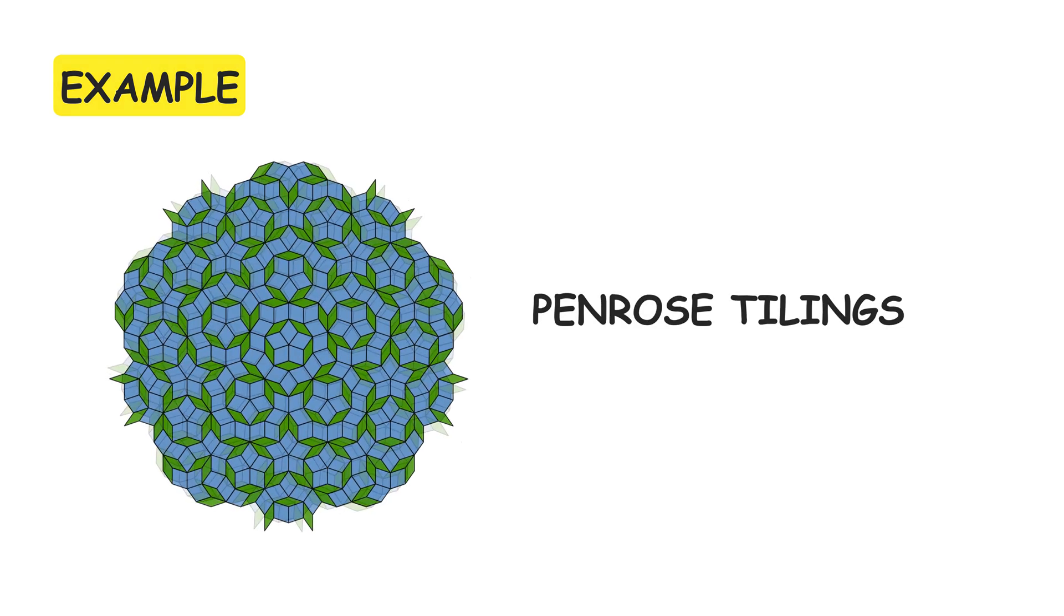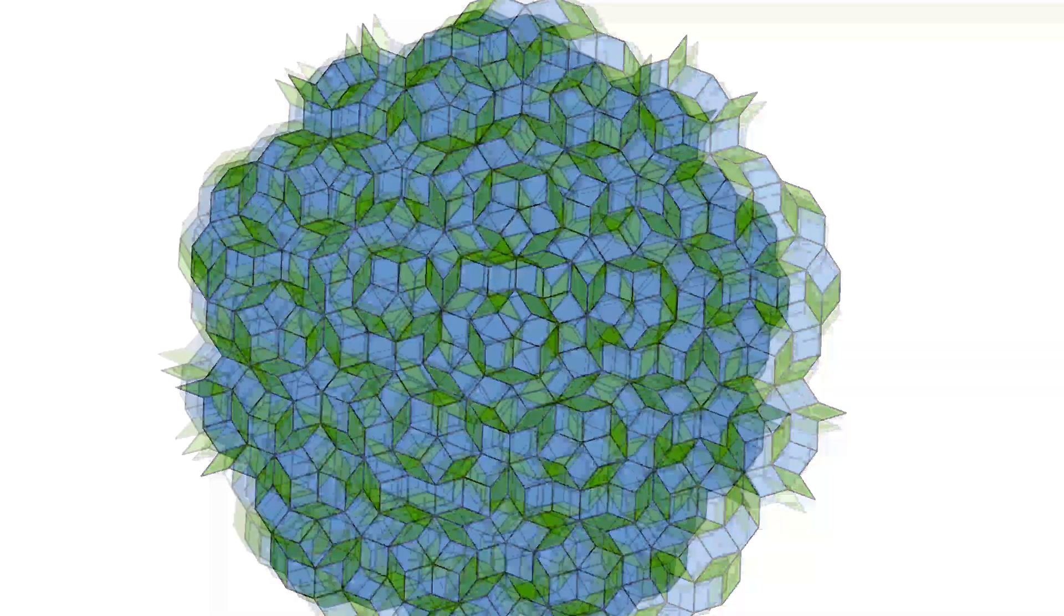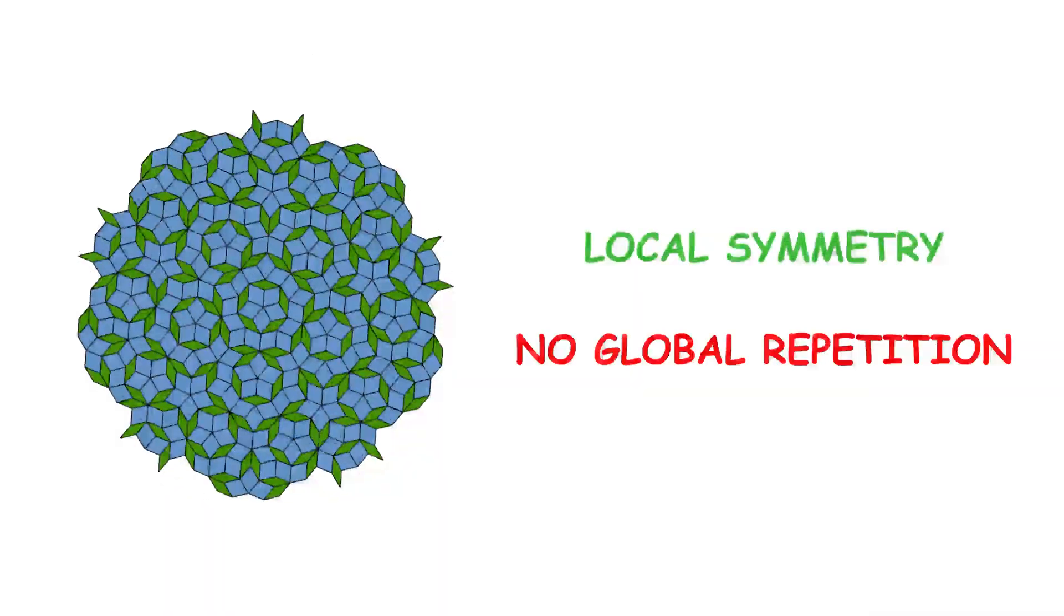An example of this is figures such as Penrose tilings, which radically defy this visual and geometric assumption. In these configurations, there is local symmetry but no global repetition.